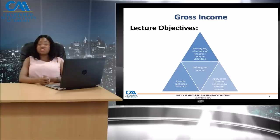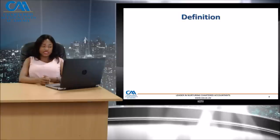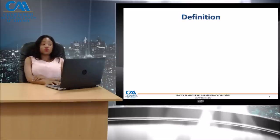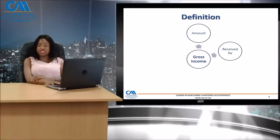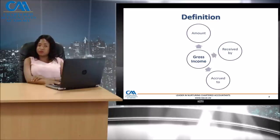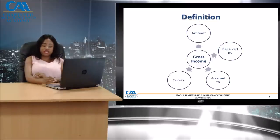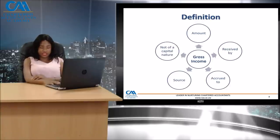We'll start by defining what gross income is. Gross income is the total amount received or accrued to in favor of a person, or deemed to have been received or accrued, in any year of assessment from a source within or deemed to be within Zimbabwe, excluding amounts proved by the taxpayer to be of a capital nature.